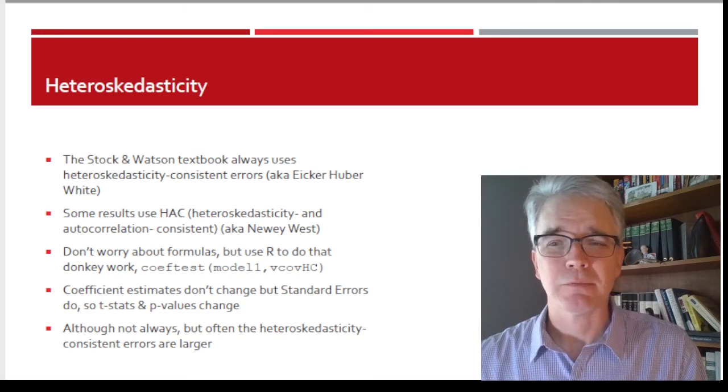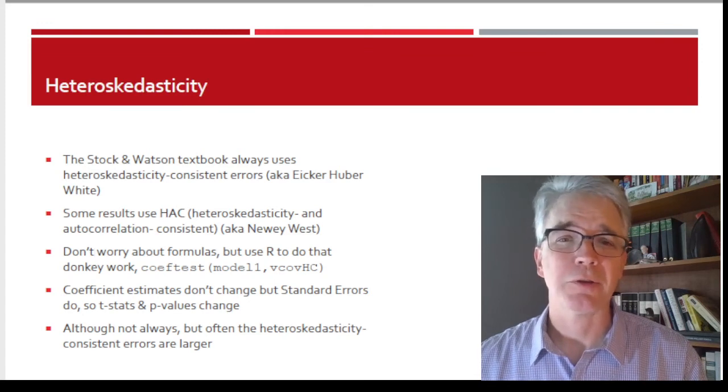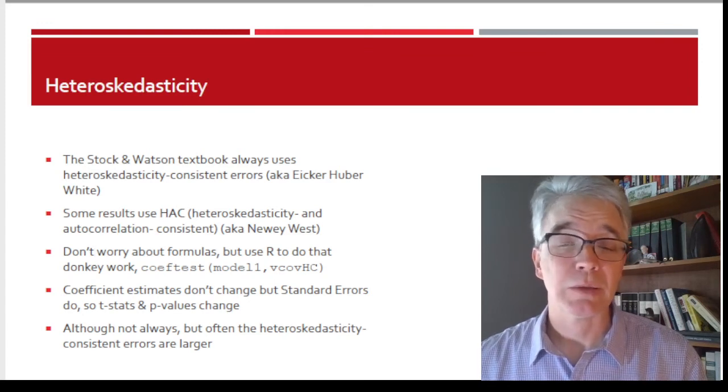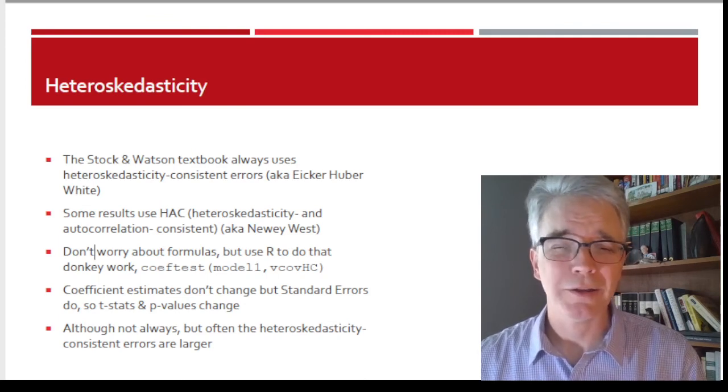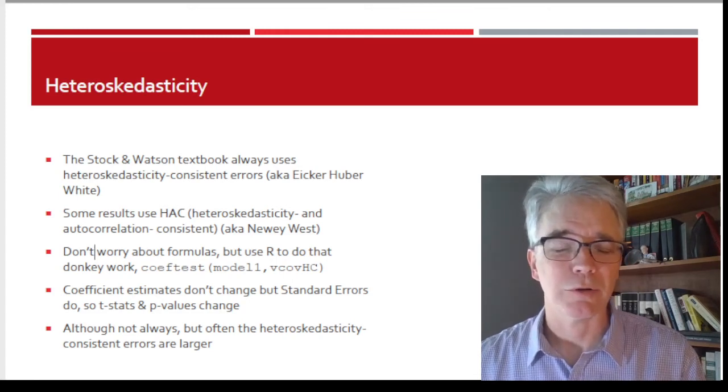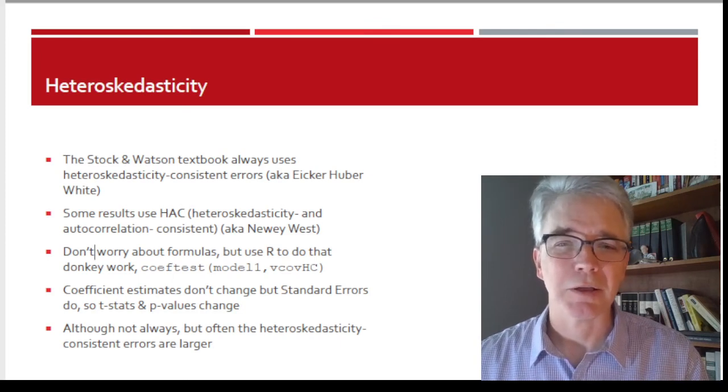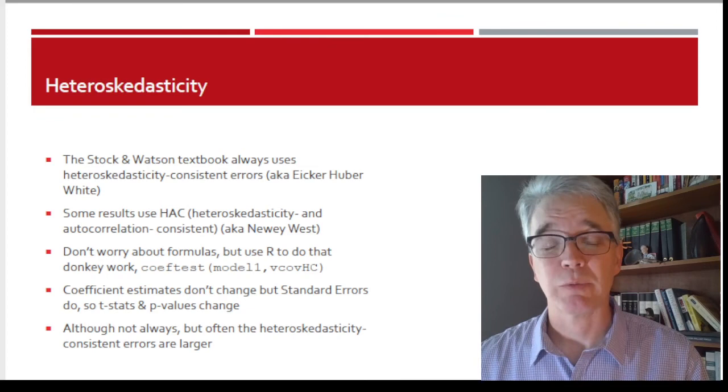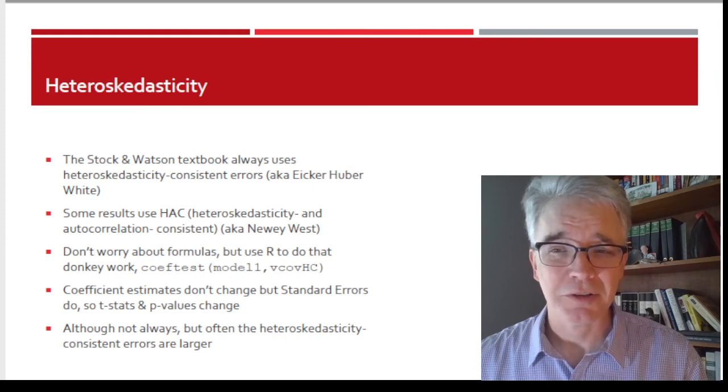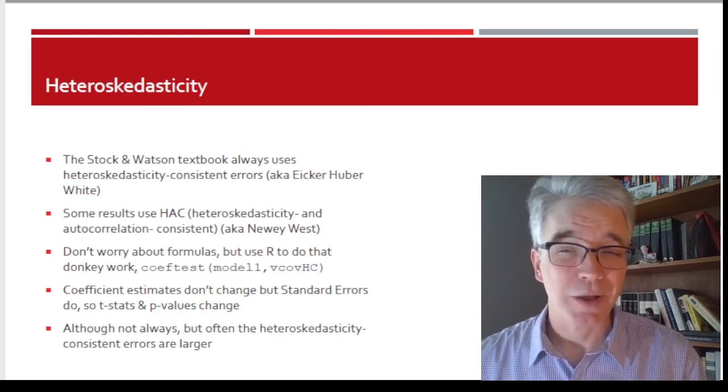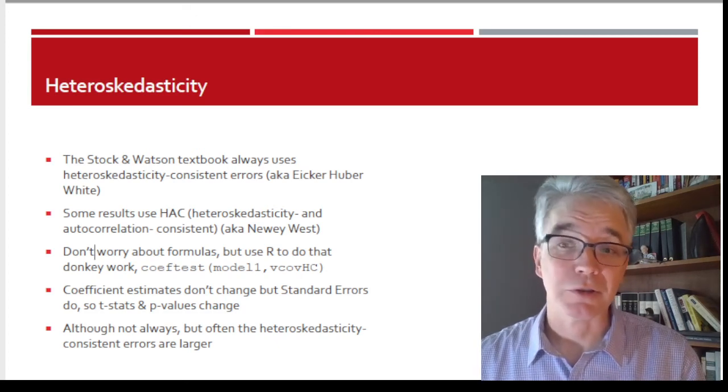So, reeling back, the Stock Watson textbook always uses what are called heteroscedasticity consistent errors. Sometimes the people that developed this, not always working together, were Eicher, Huber, and White. And so sometimes you hear one or some of those names together or all of them together. It has a lot of different possible names. Sometimes people also use HAC, which is heteroscedasticity and autocorrelation consistent errors, sometimes called Newey West errors. I mean, the nomenclature is just a mess, as well as the formulas are a mess. The nomenclature is a mess.